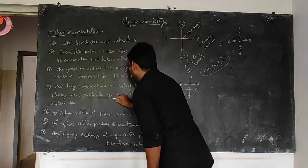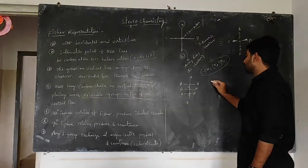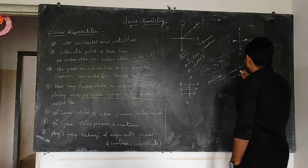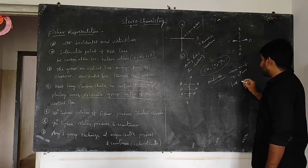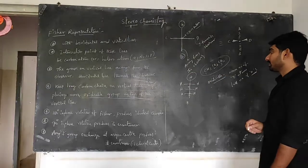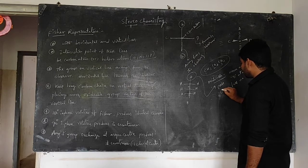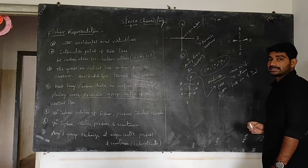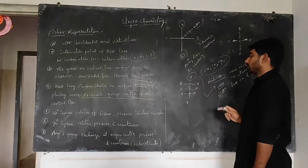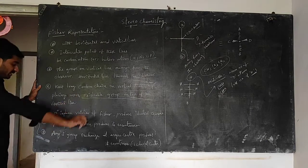The highly oxidizable group — the group with more oxygen atoms and fewer hydrogen atoms — should always be placed at the top of the vertical line. Examples of highly oxidizable groups include carboxylic acid and aldehyde. These are placed at the top in a Fischer projection.